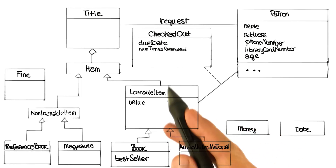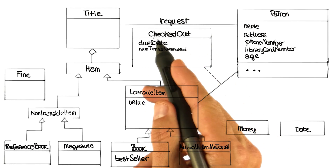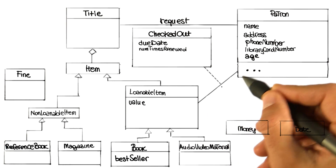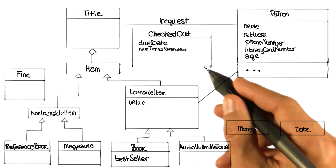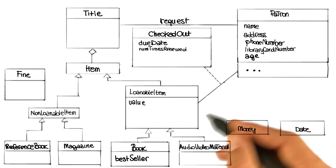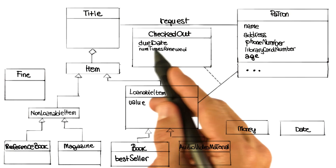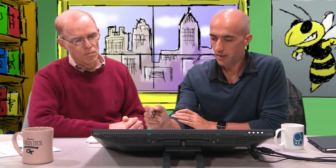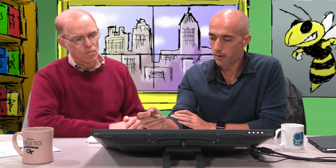So what we can do here is create this class, which I'm going to call checked out. I'm going to connect it with this association. And then I'm going to move the due date and the renewed attributes from the loanable item here into this checked out class. In this way, it makes it very explicit for somebody looking at this class diagram that these characteristics are characteristics of the loan and not of the elements involved in the loan.